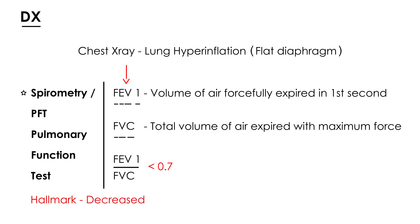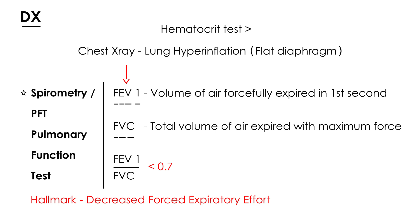The hallmark of COPD is a decreased forced expiratory effort. One additional lab finding worth mentioning is that hematocrit in COPD can be very high — sometimes as high as 50 — which is known as polycythemia. This is sometimes mentioned on clinical vignettes.